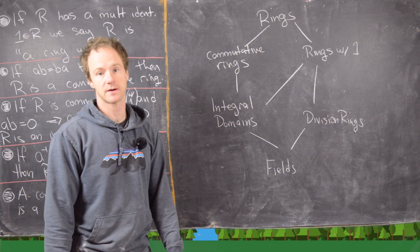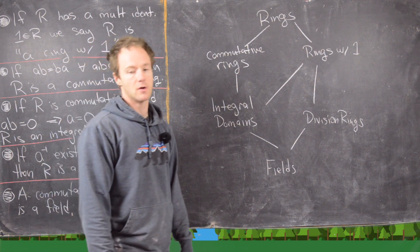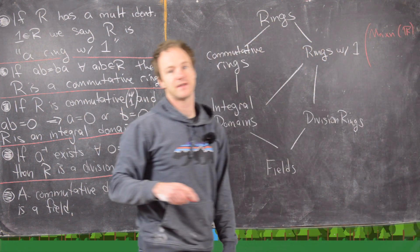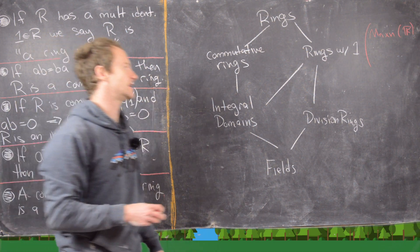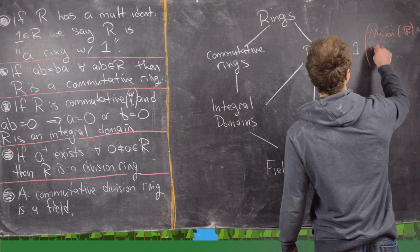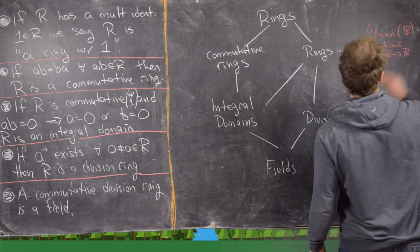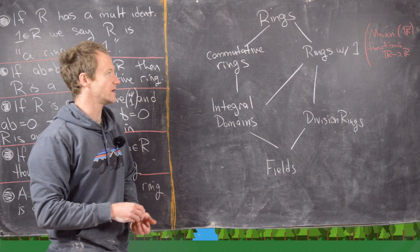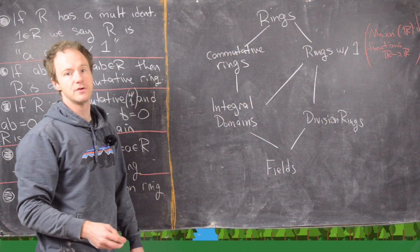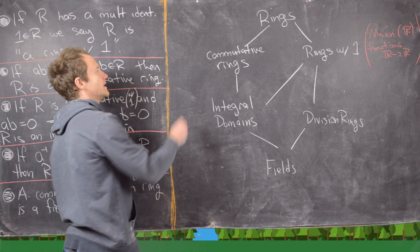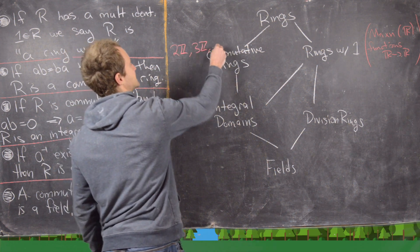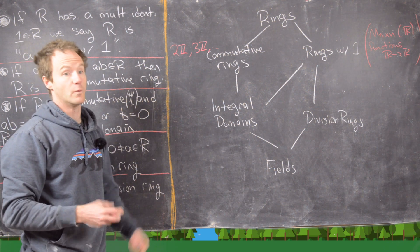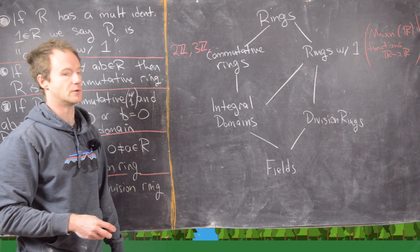For examples: rings with 1 include n-by-n matrices with entries in the real numbers — the identity matrix serves as the identity — and also functions from R to R, which has the identity function as an element. For commutative rings, we have 2ℤ, 3ℤ, etc. These do not have an identity because every element is a multiple of 2 or 3, so the number 1 is not included.